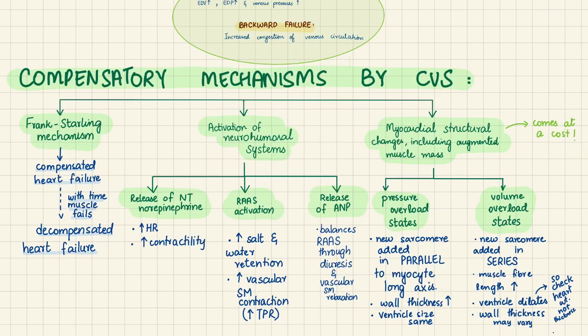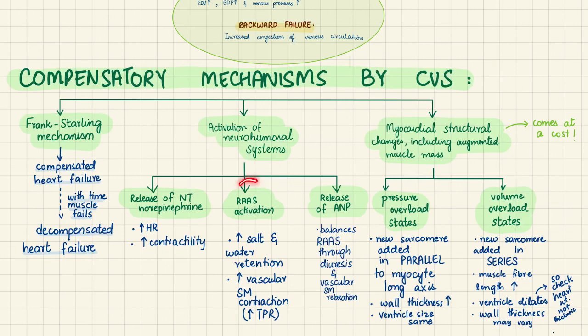When the heart starts failing or cannot contract as forcefully as it should, norepinephrine is released. Beta-1 receptors in the heart increase both heart rate and contractility, both of which maintain cardiac output.